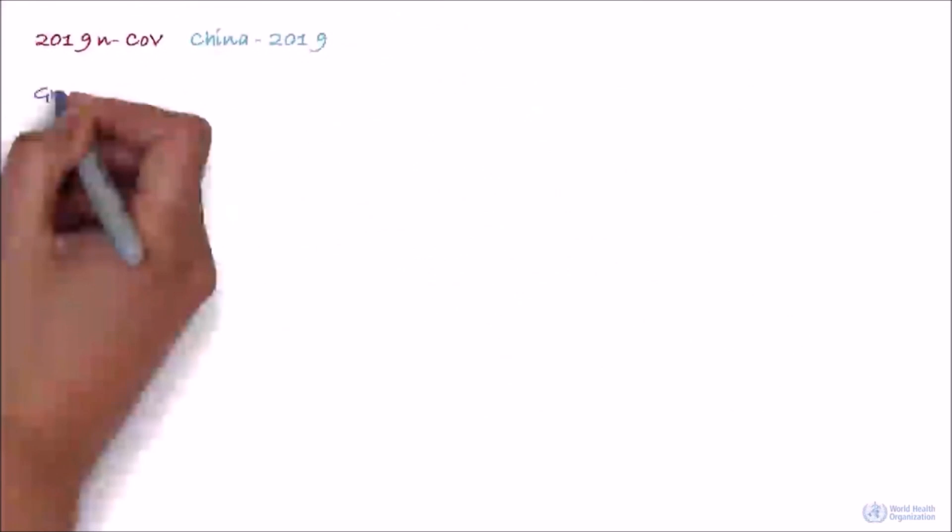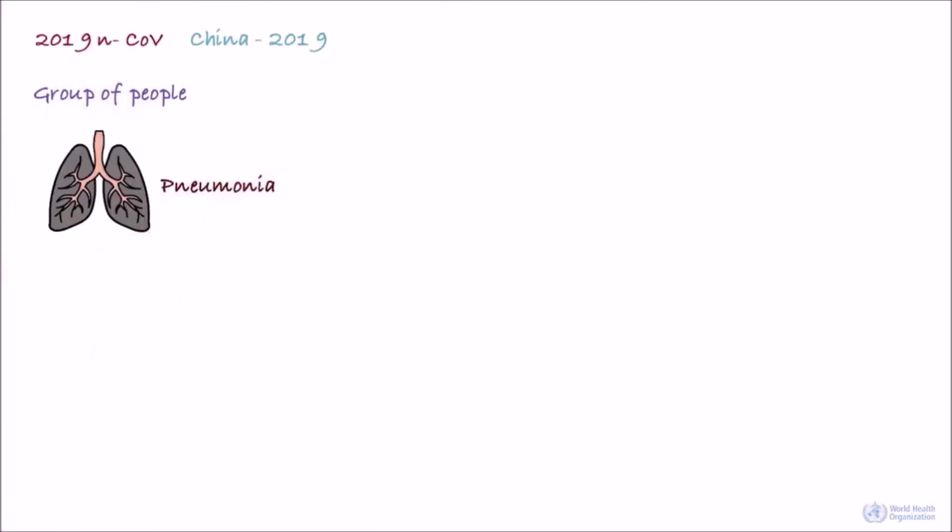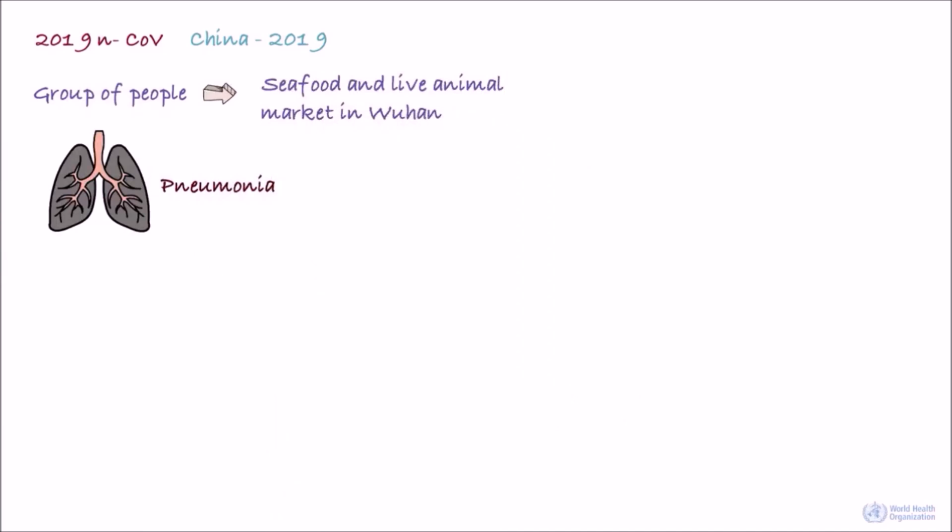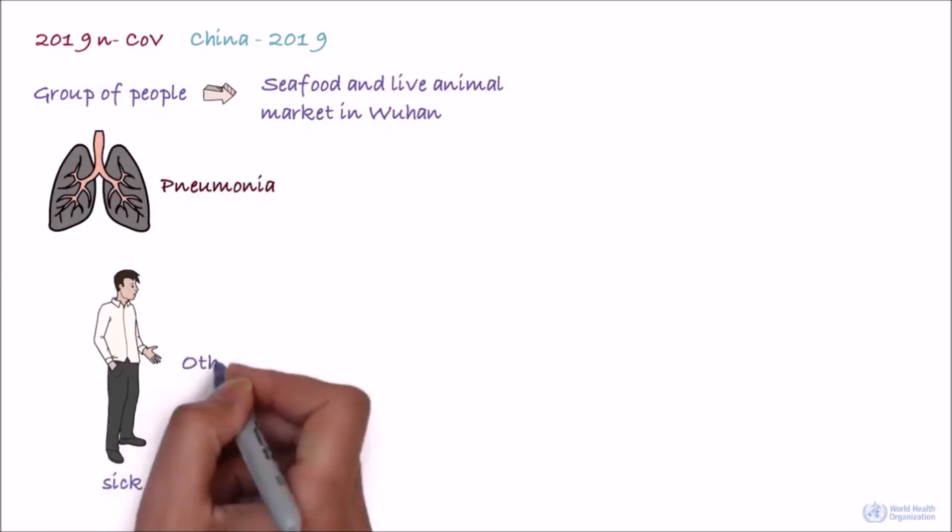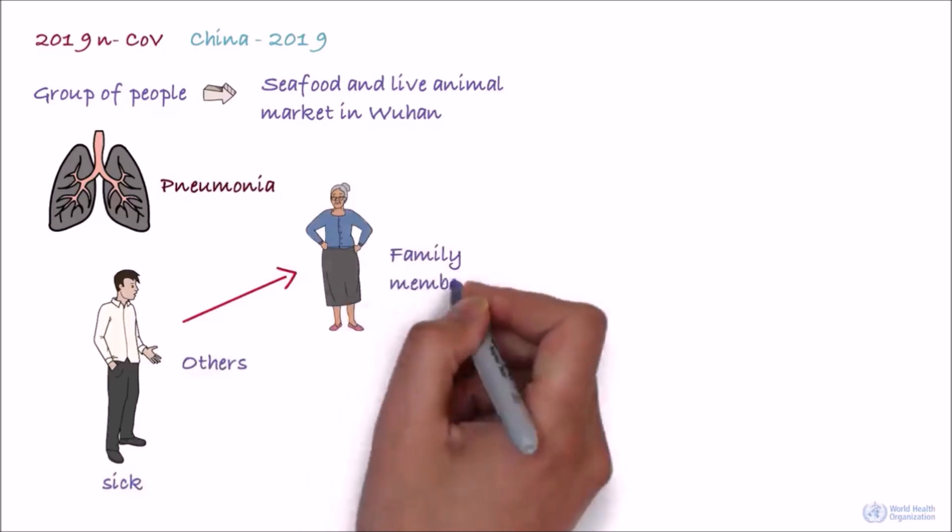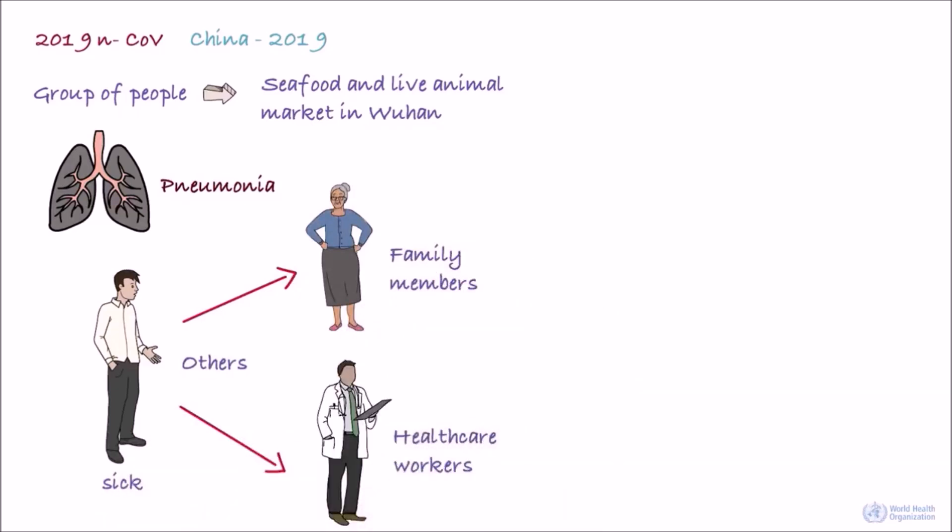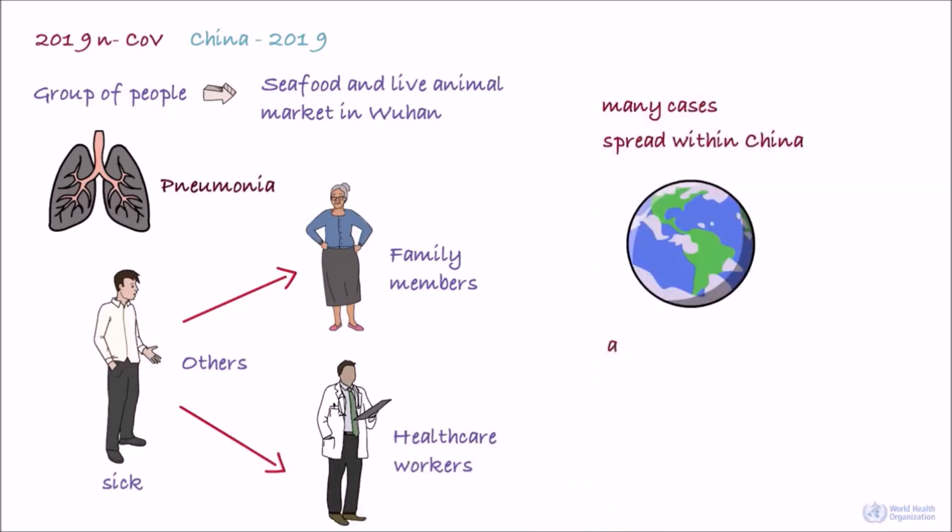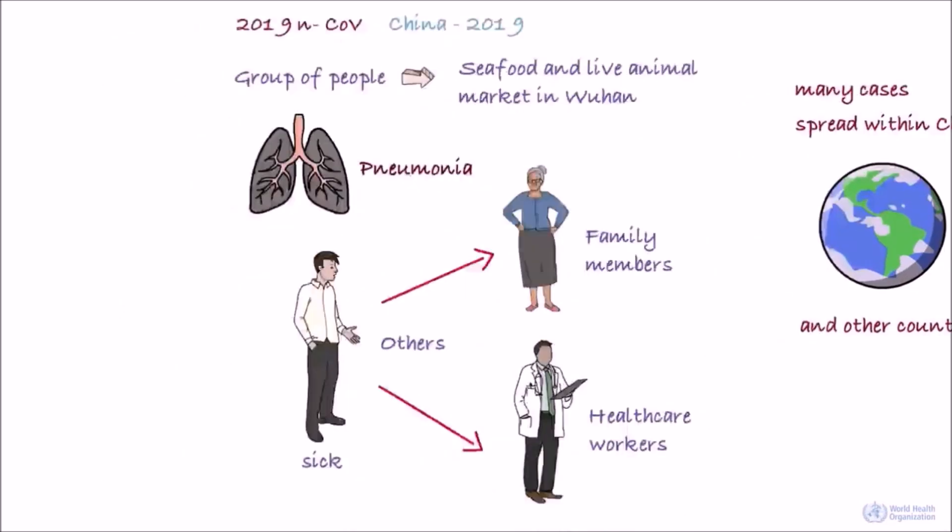It initially occurred in a group of people with pneumonia who'd been associated with a seafood and live animal market in the city of Wuhan. The disease has since spread from those who were sick to others, including family members and healthcare staff. There are many cases at present, and the disease has spread within China and also to a number of other countries.